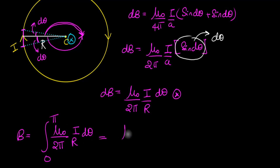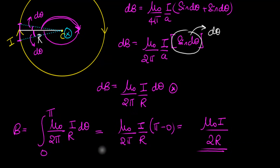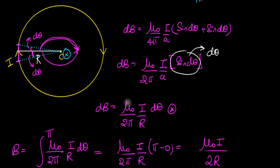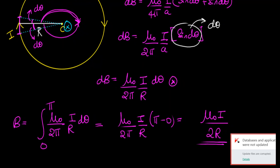Therefore, B = μ₀/2π times i/r times the integral of dθ from 0 to π, which is just π. So B = μ₀/2π times i/r times π, and the π cancels, giving B = μ₀i/2r. That's exactly the answer. Do you see how elegant this formula is? This one single formula — derived for a straight wire — was useful for so many cases, even for cases where the wire was not straight. I'll see you next time, stay tuned.